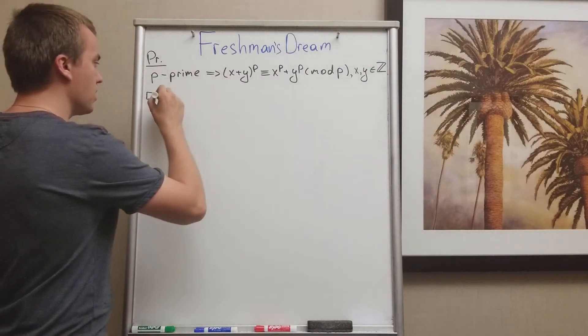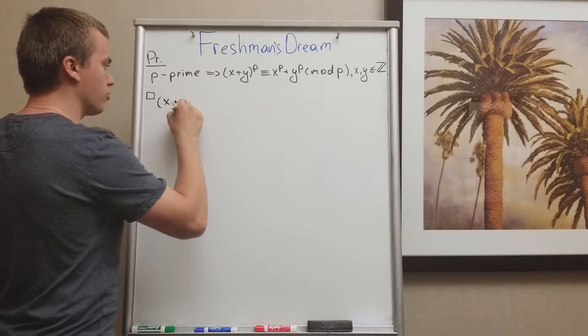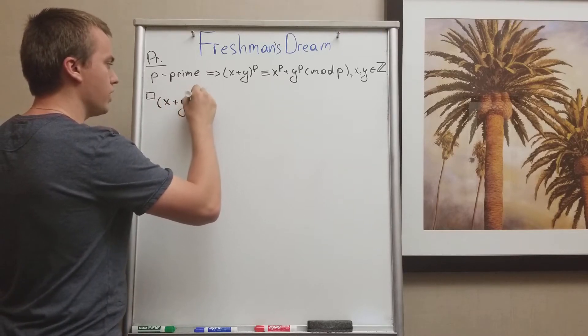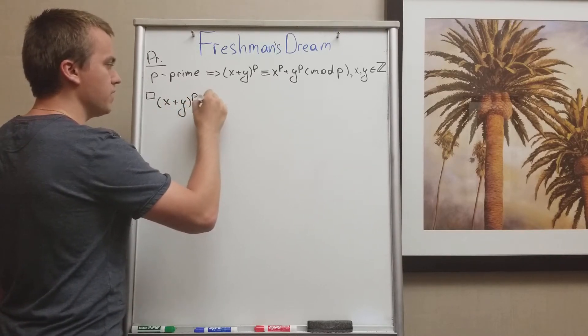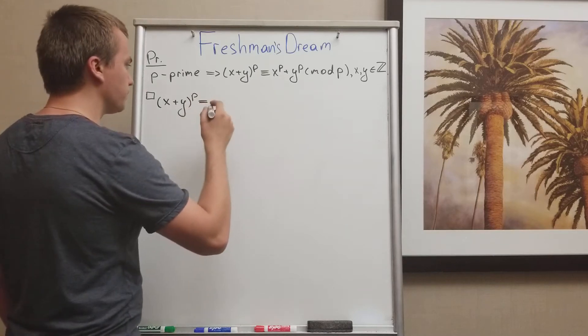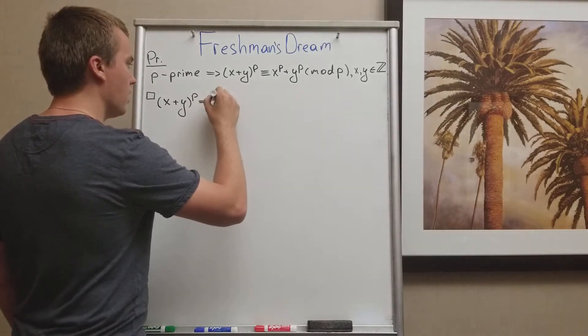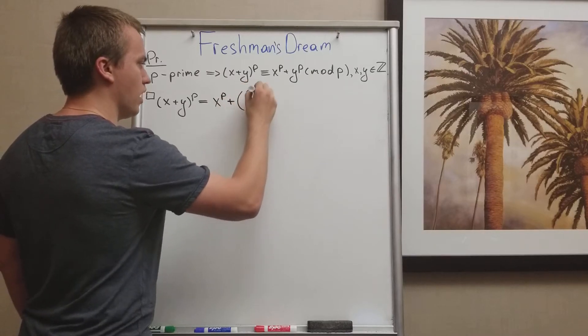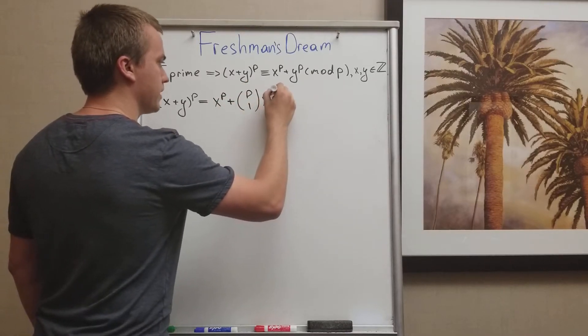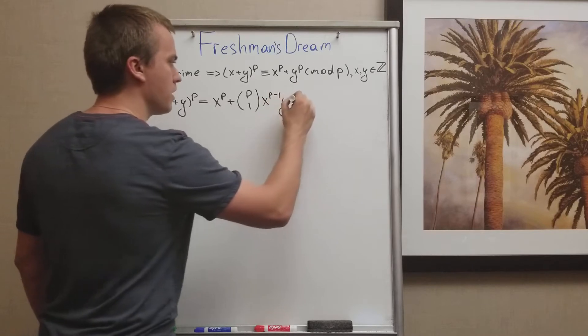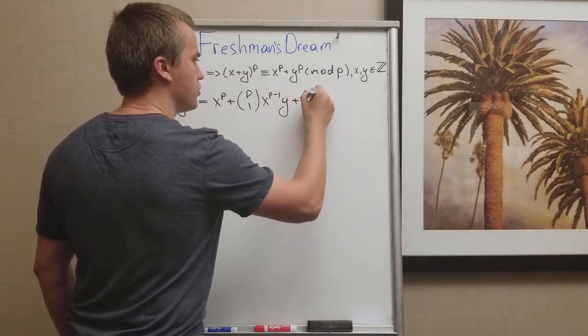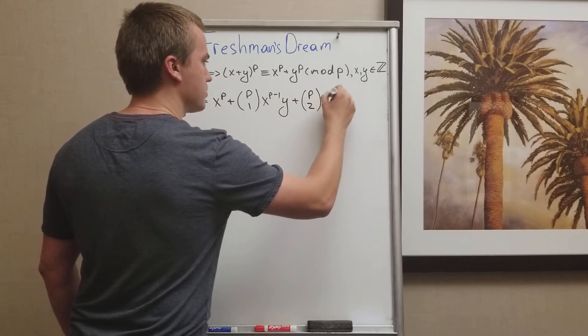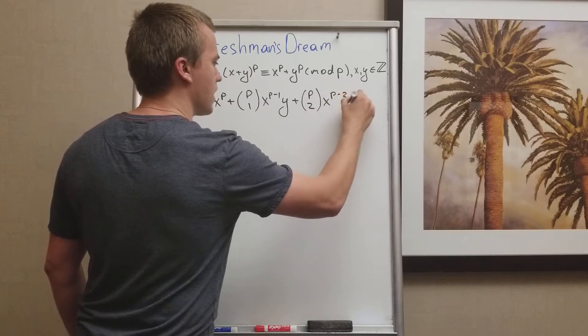And how I'm going to approach this problem? I'm going to use the formula by Newton's binomial theorem. So I'll have x plus y to the power of p. It equals x to the power of p plus p choose 1, x to the p minus 1 times y, plus p choose 2, x to the power of p minus 2 times y squared,